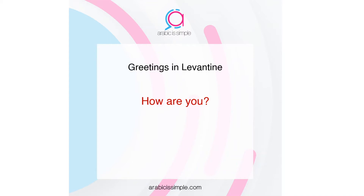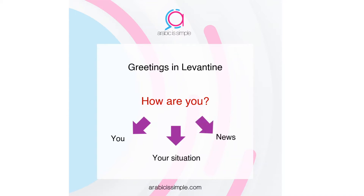In Levantine, culturally it goes in three ways in a row — to ask 'how are you,' then 'how's your situation,' and after that 'what's your news.' It is only a cultural concept to ask how are you in three different ways. To a lot of people that might sound weird, but to the Levantine countries or Arabs in general, it means that you care about the person and want to ask really how they are doing.